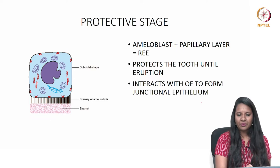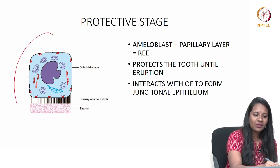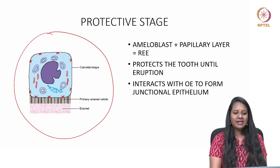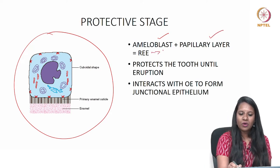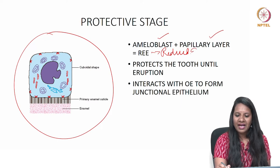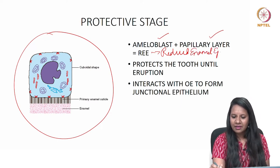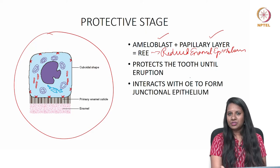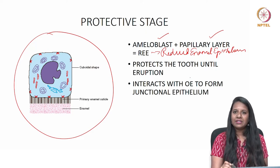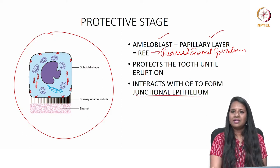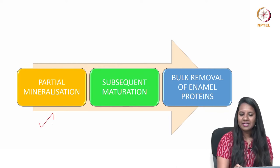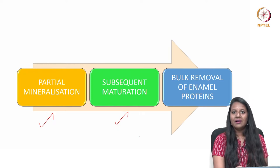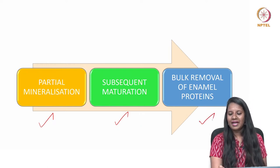Moving to the final protective stage: the ameloblasts reduce in size and combine with the papillary layer to form the reduced enamel epithelium. This protects the tooth until it erupts into the oral cavity, whereupon it interacts with the oral epithelium to form the junctional epithelium. Hence, amelogenesis involves initial partial mineralization and subsequent maturation with increase in crystal width and bulk removal of enamel proteins.